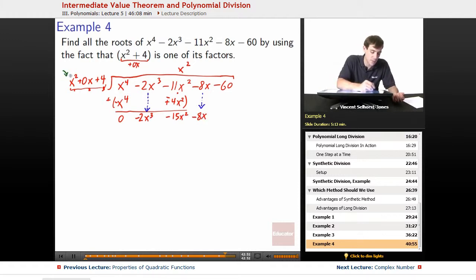So once again, we just ask, how many times does the first term go into the first term here? So negative 2x cubed divided by x squared gets us just negative 2x.